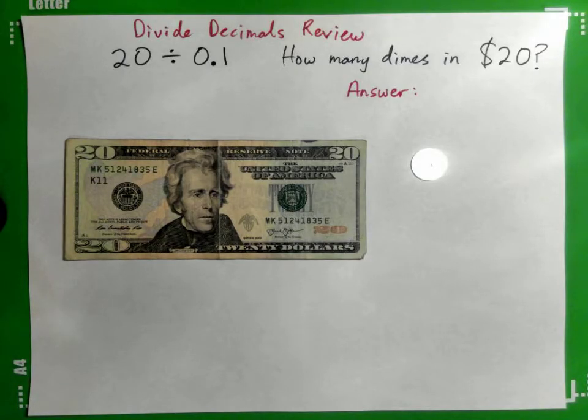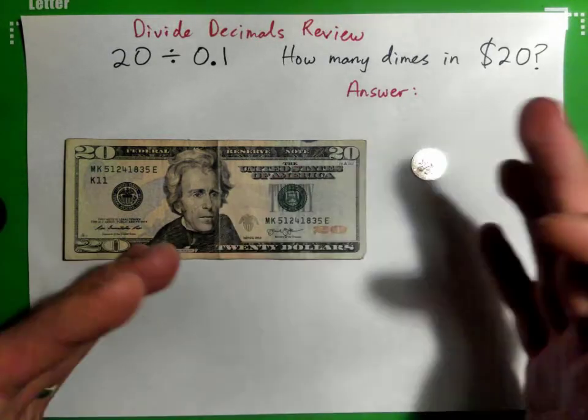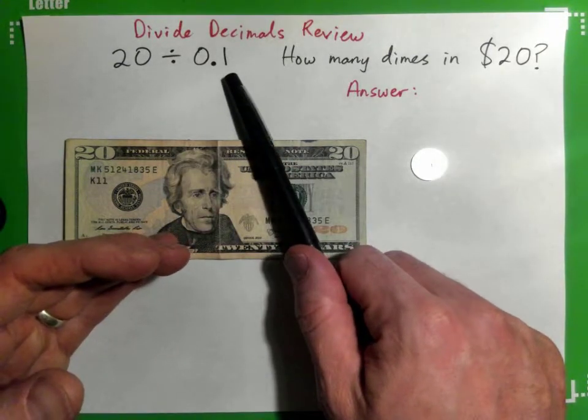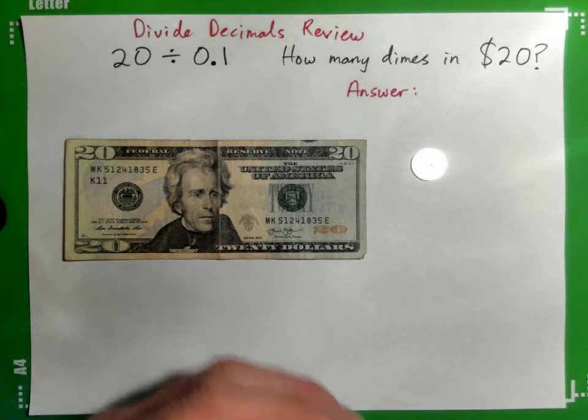Okay, so we're going to divide decimals review again. We're going to go 20 divided by 0.1, which is actually the same thing as asking how many dimes are in $20. The reason it's the same thing is because division is like how many of these are contained in that.